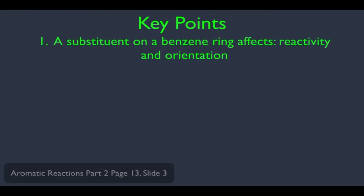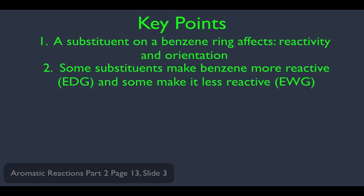Now that we've talked about all the substituents, here are the key points. Number one: a substituent on a benzene ring affects both reactivity — making it more or less reactive — and orientation, meaning where other electrophiles will add, either ortho-para-directing or meta-directing. Number two: substituents that make benzene more reactive are electron donating groups; those that make it less reactive are electron withdrawing groups. There are only three groups: ortho-para-directing activators, ortho-para-directing deactivators, and meta-directing deactivators. Memorize all substituents in those groups before your next orgo exam, and also develop a method for analyzing substituents not on your list.